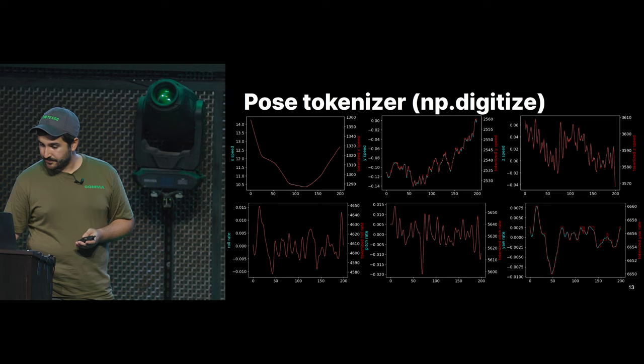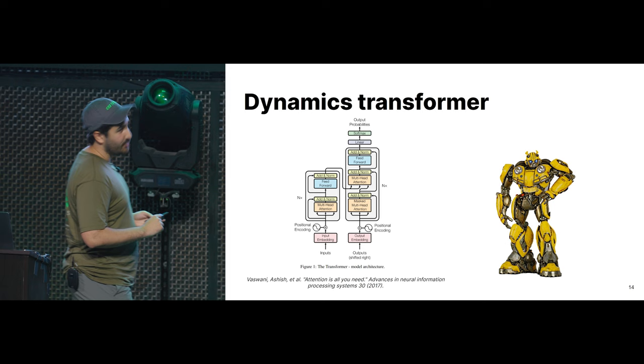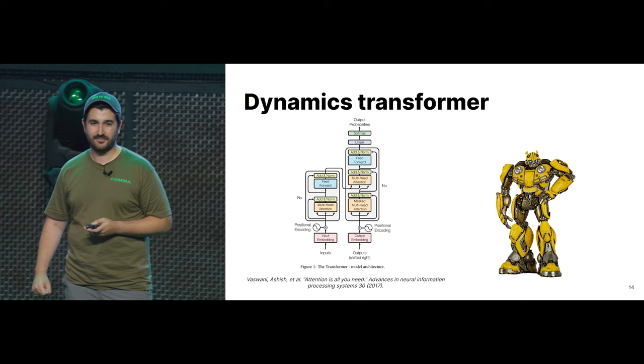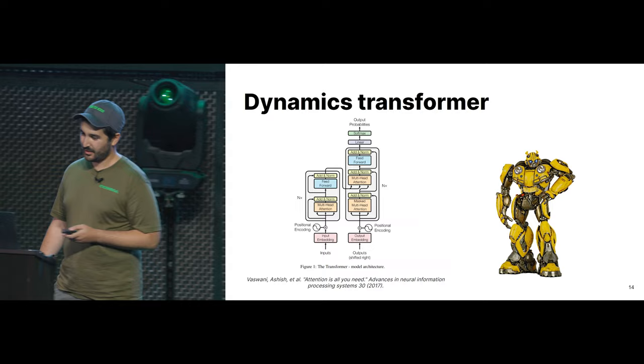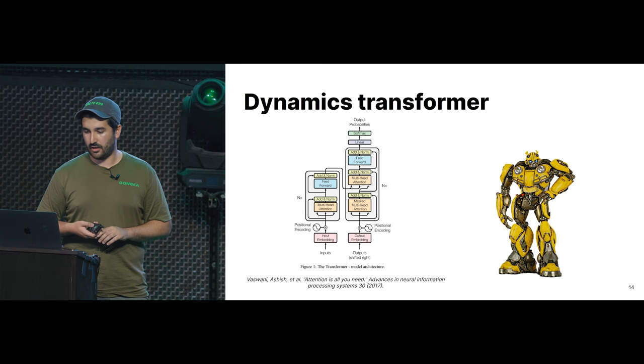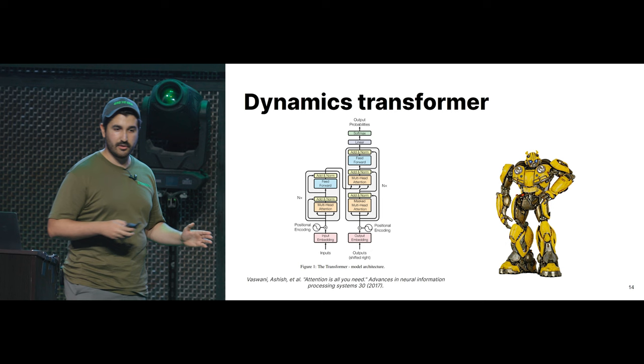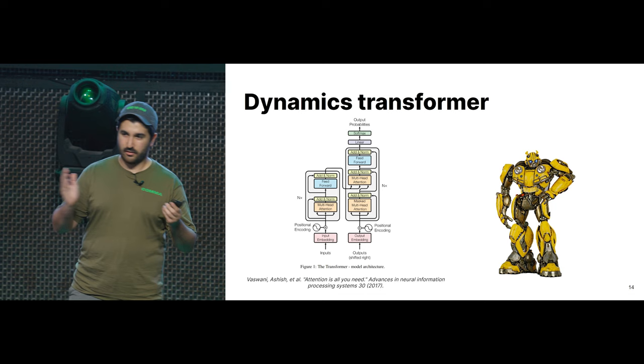Now to the beefy part: the dynamics transformer. A transformer is basically the same architecture as a large language model — ChatGPT, LLaMA, these kinds of models. For large language models, a token is roughly one word; a sentence is a set of tokens. For us, an image is a set of tokens, a video is a set of images — so a set of sets of tokens. We train it the same way large language model people do: cross-entropy loss, predict the next token. It's a stack of fully connected layers and attention layers.